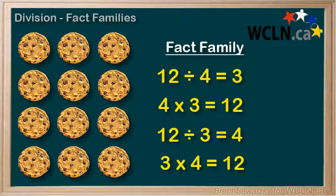Within our fact family, we can use multiplication to get the total number of cookies. Or, if we already know the total number, we can determine how to divide them up into groups.